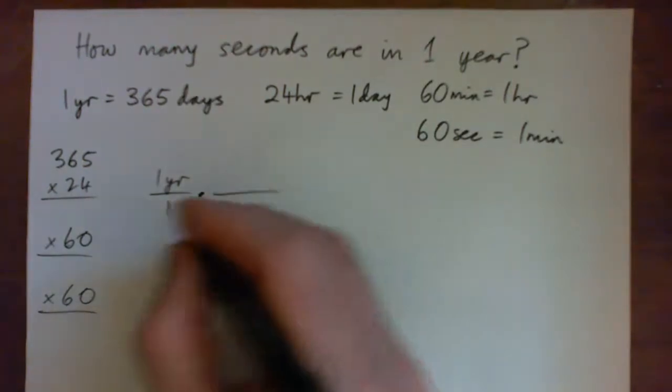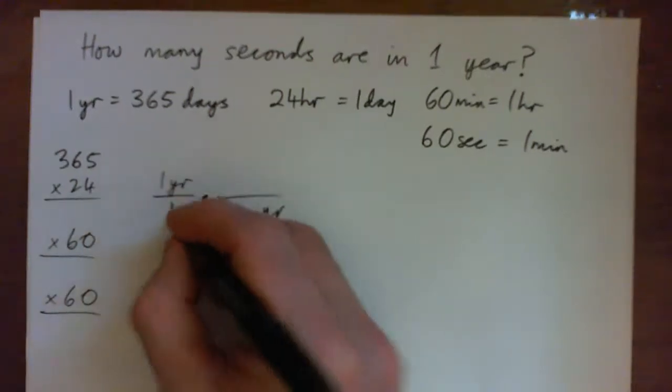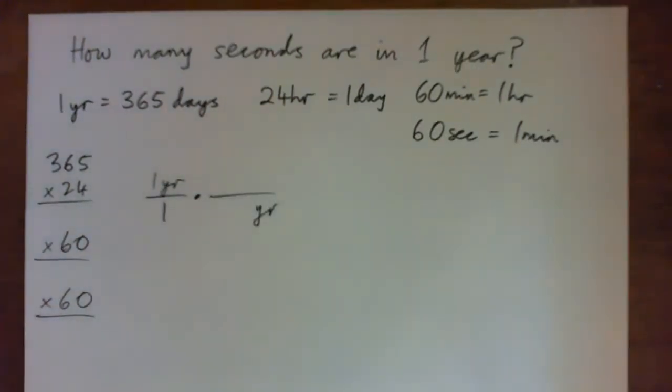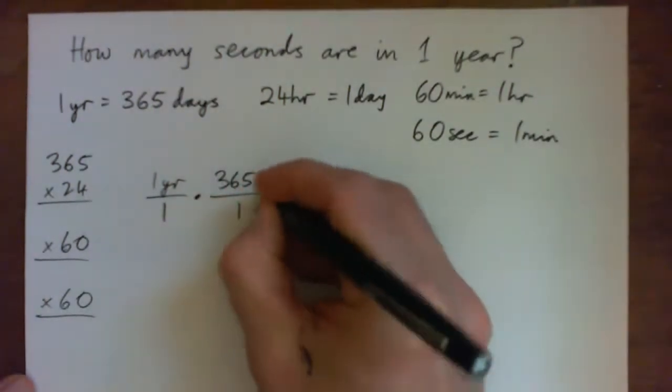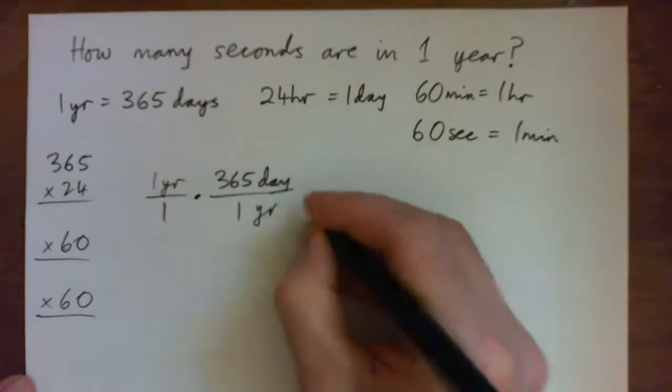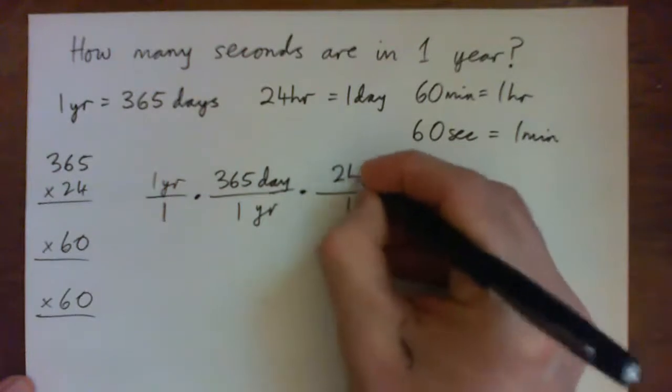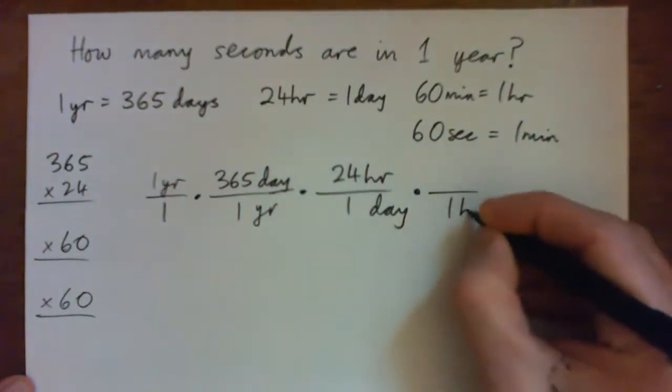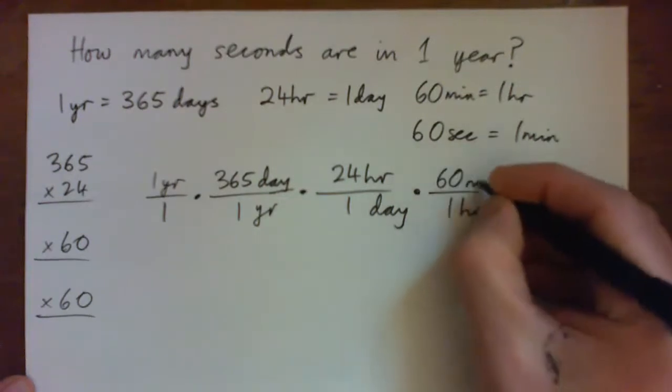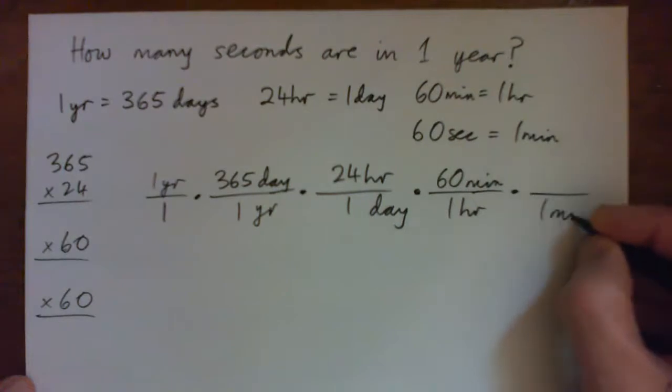So one year is 365 days, we write one year over one and multiply by fractions. One year is 365 days, then one day is 24 hours, then one hour is 60 minutes, then one minute is 60 seconds.